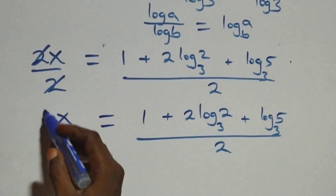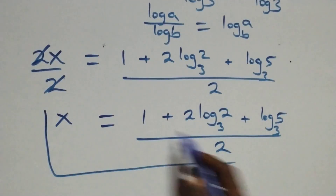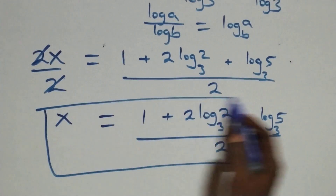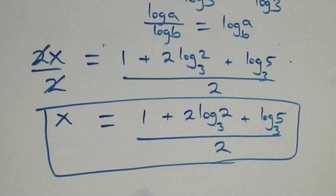So the value of x is one plus two log two base three plus log five base three, all over two.